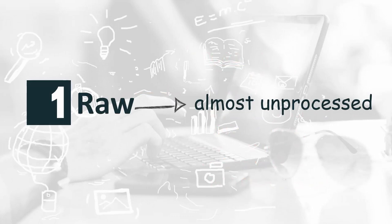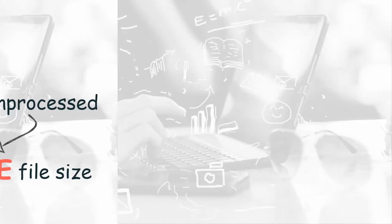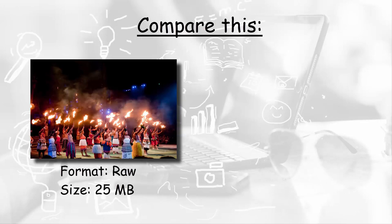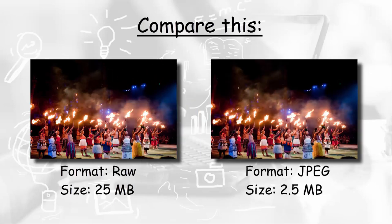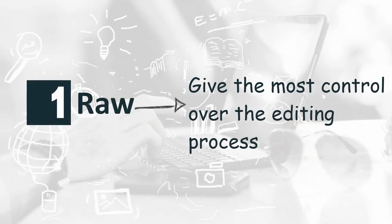Since RAW files preserve the most amount of information of an image, the size of that image in the RAW format can be many times larger than in another format. For comparison, the size of a RAW image can be as high as 25 megabytes, while a compressed version of the same image converted to the JPEG format can be decreased to only 2 or 3 megabytes.